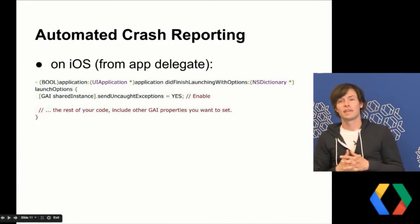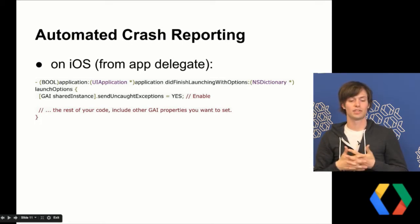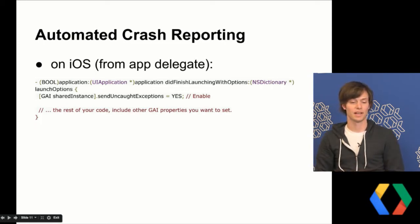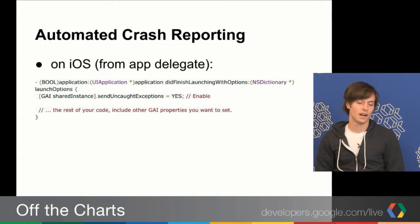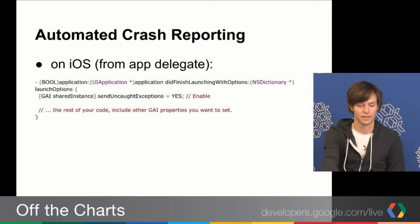Most of the examples I'm giving today are for Android, but I want to show a quick iOS example. Just like with EasyTracker, it's actually just one line of code to get automatic crash tracking up and running. You add this line to your app delegate — very similar to the XML file in Android — and you just turn it on to send uncaught exceptions.